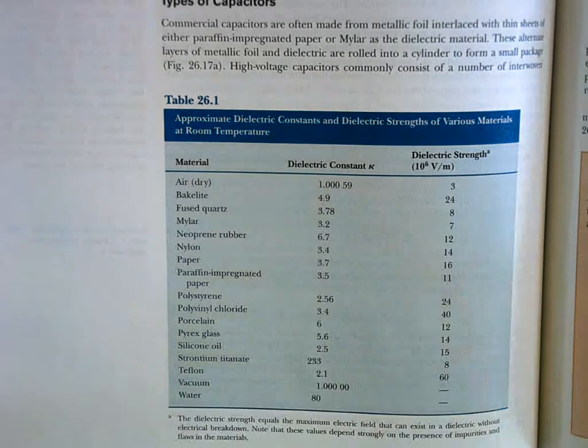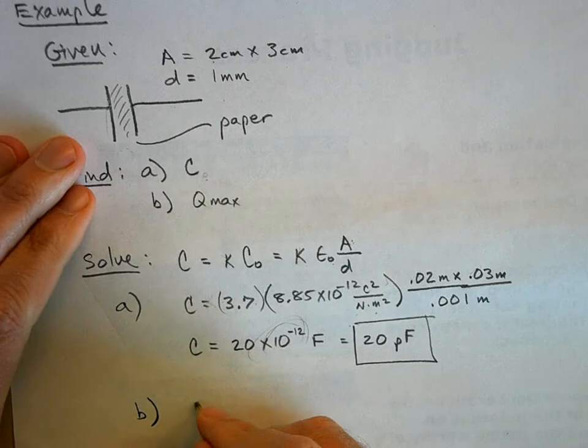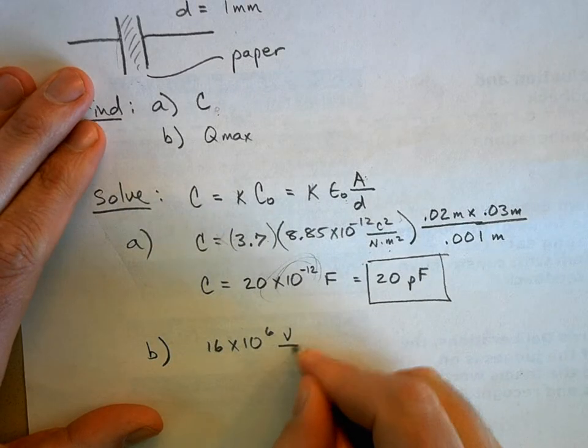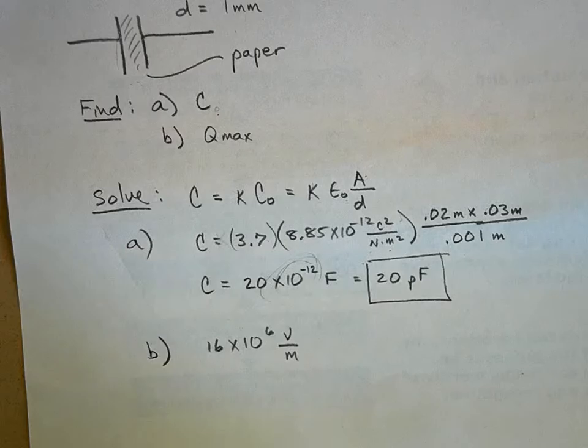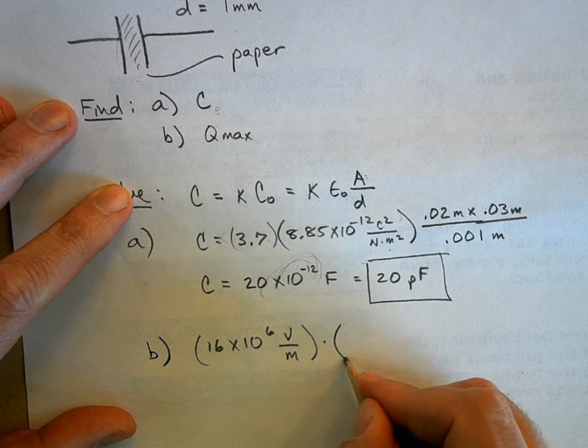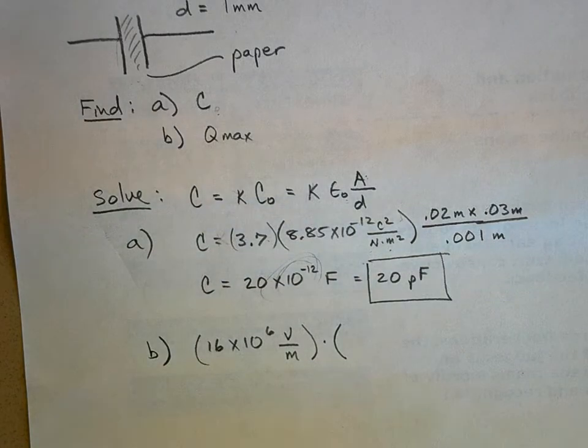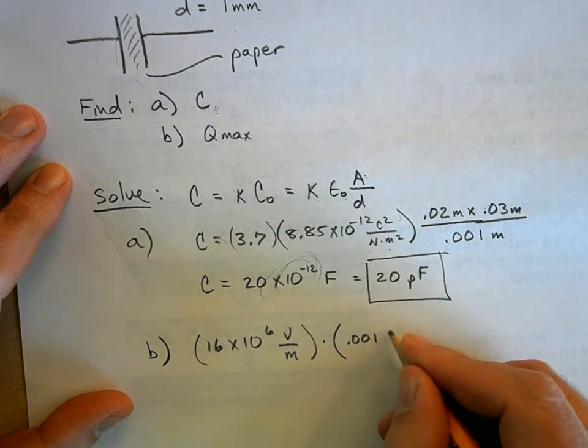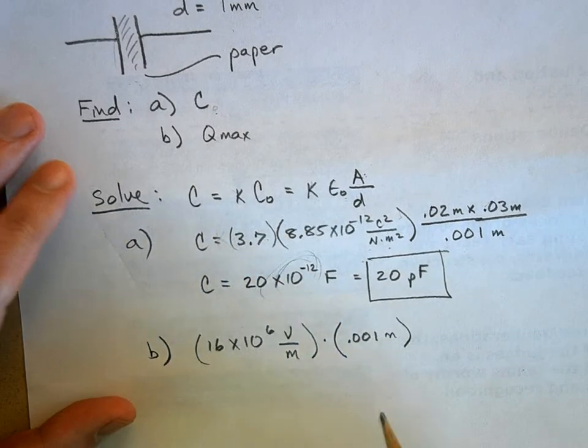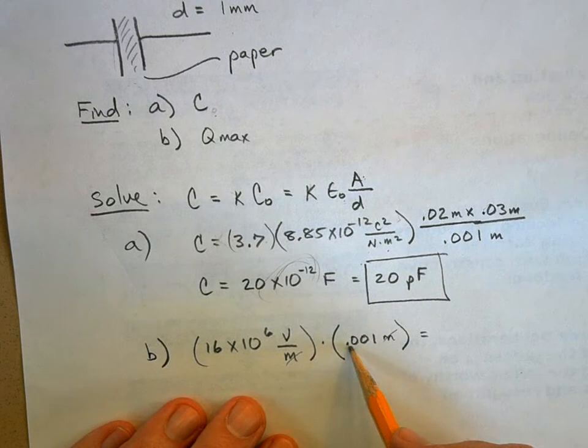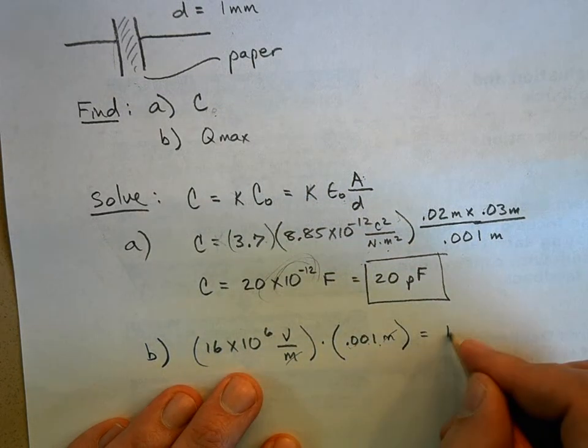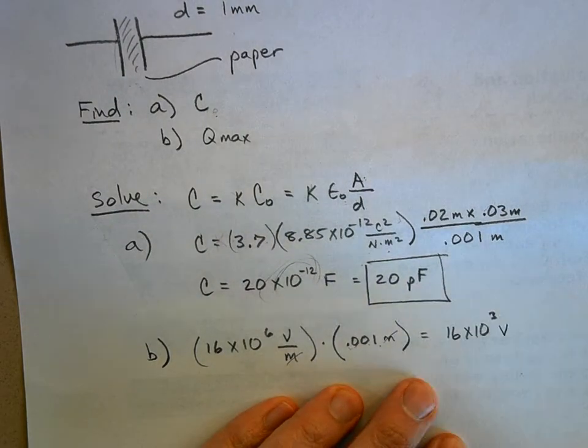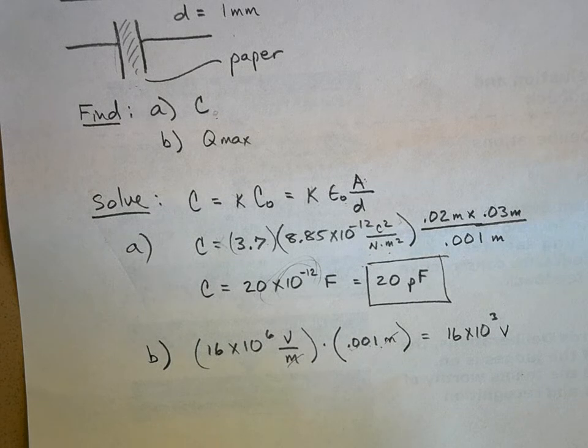So what you do is you take this dielectric strength and just use units here. You've got 16 times 10 to the 6 volts per meter. You multiply that by the thickness. What's the thickness of the paper? One millimeter. That's 0.001 meters. I think I can do the math in my head. That's equal to, this is 16 times 10 to the 3 or 16,000 volts. This gives us the maximum voltage I can put on that capacitor before it will go poof.